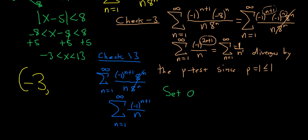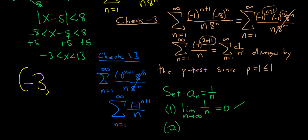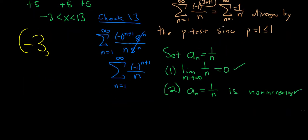For the alternating series test, a_n is the non-alternating part, which is 1/n. First, verify the limit as n goes to infinity of 1/n equals 0 — check. Second, verify it is non-increasing: the bigger n gets, the smaller the fraction, and it's not oscillating, just getting smaller — so it is non-increasing — check. Both conditions are satisfied, so the series converges by the AST. Since we have convergence at 13, we include it and use a bracket: [13].